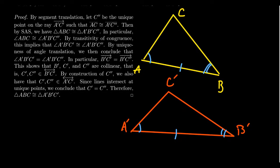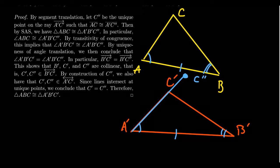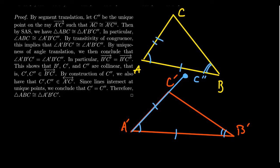Because the only criterion we have so far is side-angle-side, we're going to have to somehow turn an angle-side-angle situation into a side-angle-side situation. That's our plan. By segment translation, there exists a unique point C'' on the ray A'C' such that segment AC is congruent to segment A'C''. So we extend segment A'C' to this new point C''.